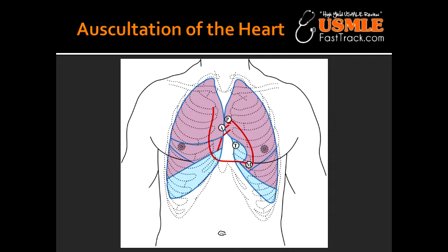What kind of murmur can be heard at the aortic area? At the aortic area you could hear a systolic murmur. Some of the conditions that can lead to this include aortic stenosis, flow murmur, and aortic valve sclerosis.